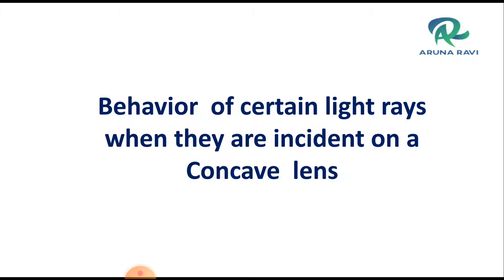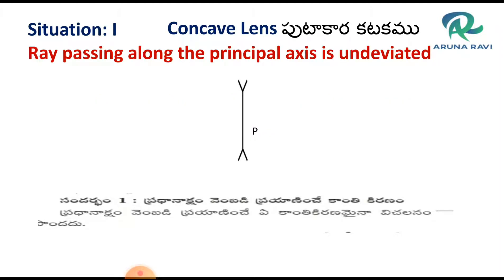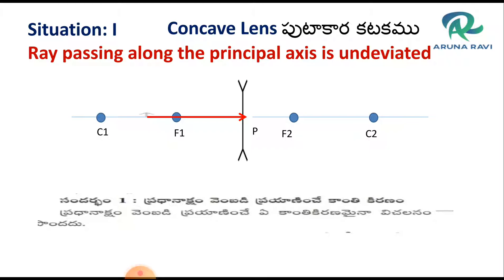Now let us discuss the behavior of certain light rays when they are incident on a concave lens. This is a concave lens with principal axis, F2, C2, F1, and C1 marked. Situation one: the ray passing along the principal axis is undeviated.